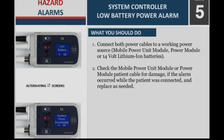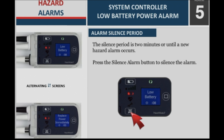What you should do: Step 1 — Connect both power cables to a working power source: mobile power unit module, power module, or 14V lithium ion batteries. Step 2 — Check the mobile power unit module or power module patient cable for damage, if the alarm occurred while the patient was connected, and replace as needed. Alarm silence period: The silence period is 2 minutes or until a new hazard alarm occurs. Press the silence alarm button to silence the alarm.